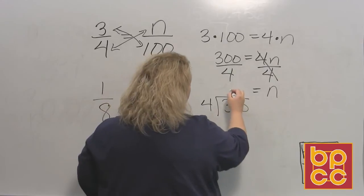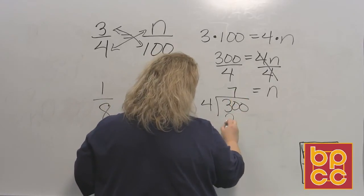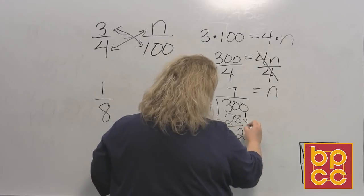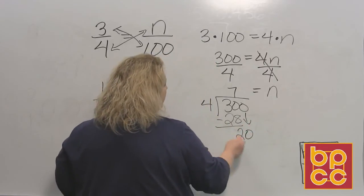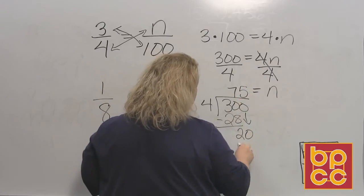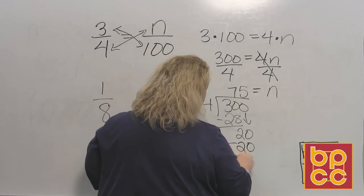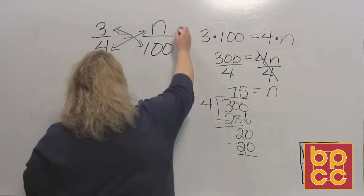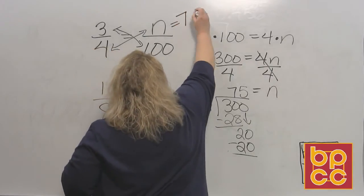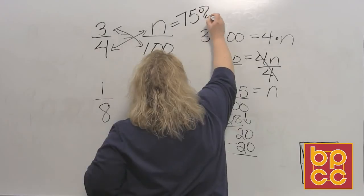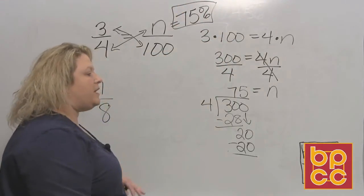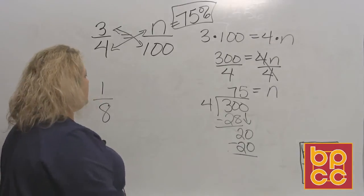4 divides into 3, 7 times, and that leaves a remainder of 2. We bring down the next number and that's 20. So 4 divides into 2, 5 times, and that leaves me 75. So n is 75. And what are we looking for? Percent. So 3 fourths is 75%. That's how you do that.